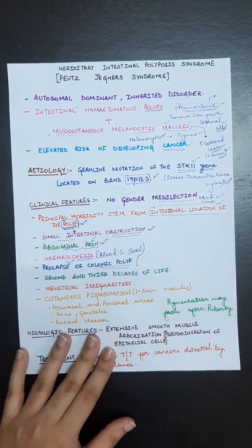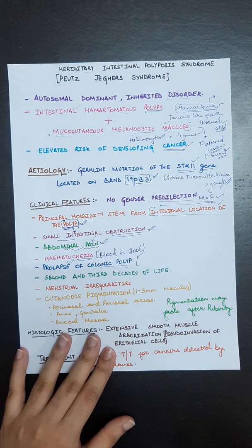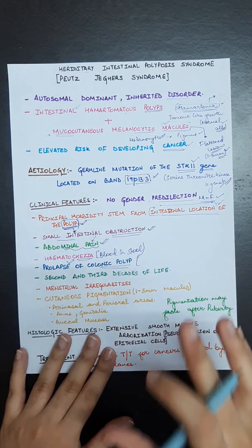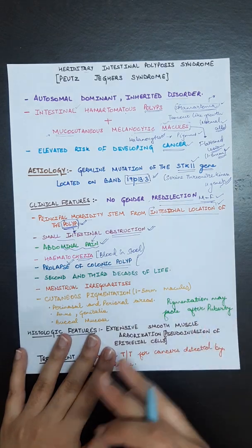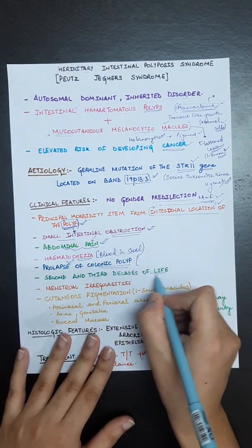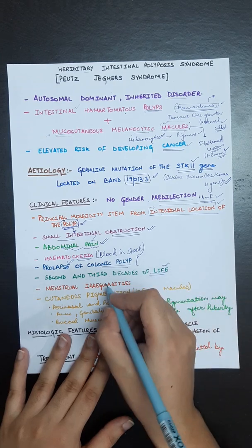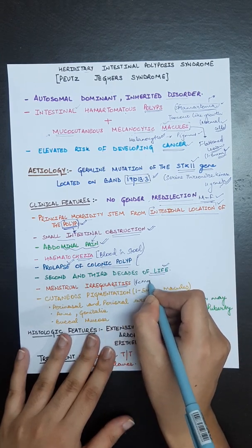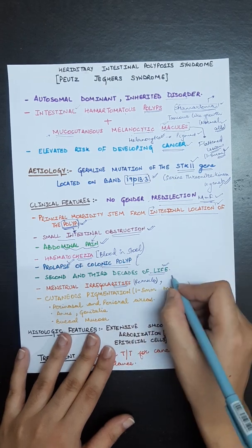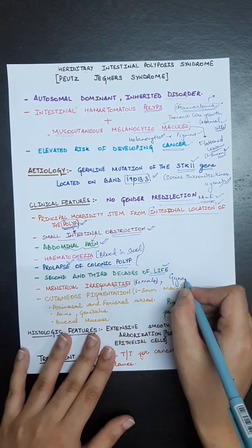There will be prolapse of colonic polyp, meaning displacement of the abnormal growth towards the rectum. It all occurs in the second and third decades of life. Menstrual irregularities will be there in females. In males, there will be gynecomastia.